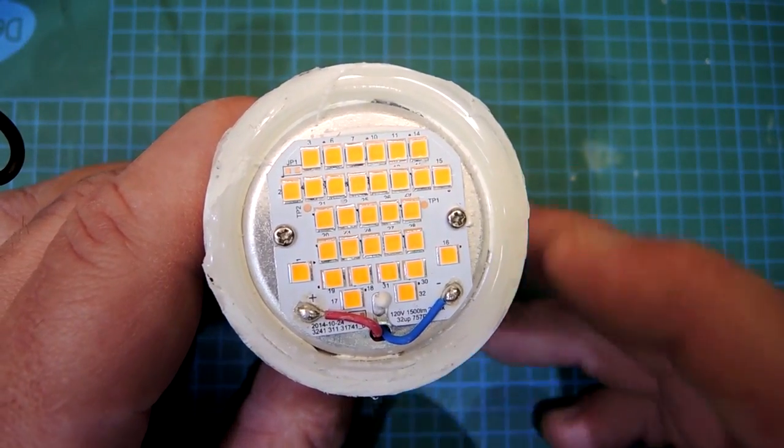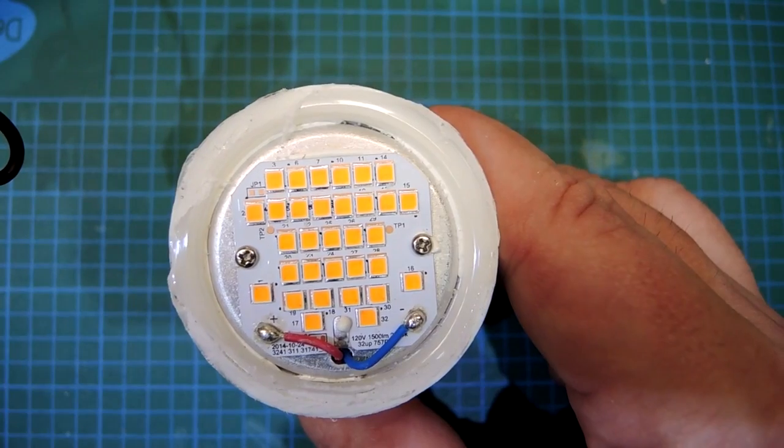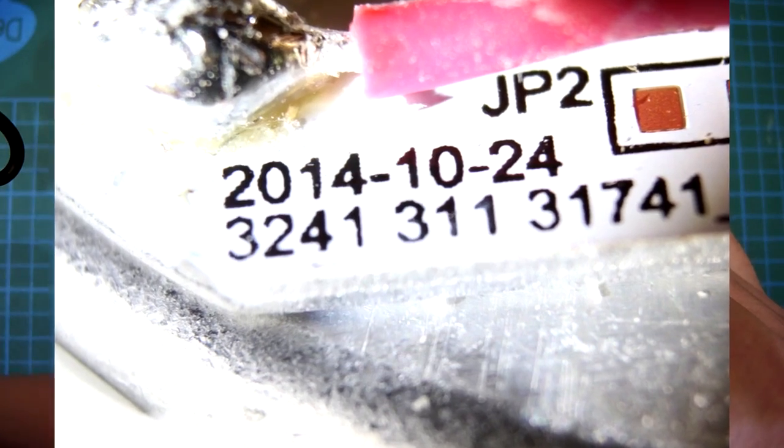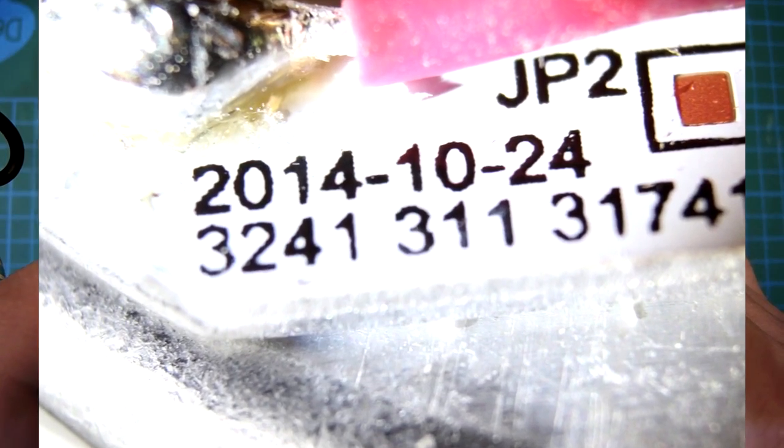Let me zoom into a whole series of photographs to look at some interesting things. First is down here, I get a date code - October 24, 2014. That's the design date of the circuit board.